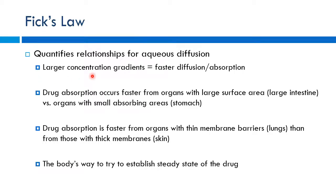Larger concentration gradients mean faster diffusion and faster absorption. Drug absorption is faster in organs with large surface areas — the small intestine with its microvilli is excellent at absorbing drugs. The stomach has a relatively small absorbing area, so less drug absorption occurs there. Organs with thin membranes like the lungs, being highly vascular and thin, absorb substances better than well-developed skin.